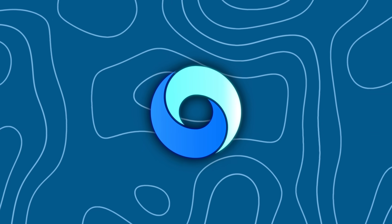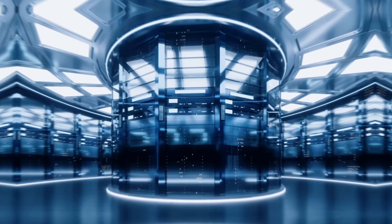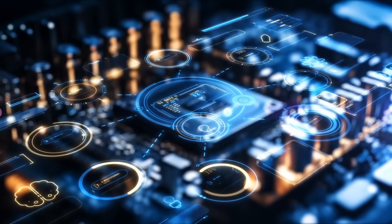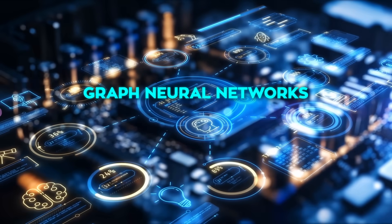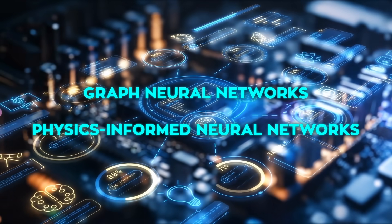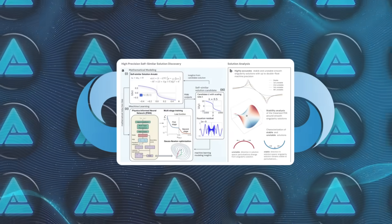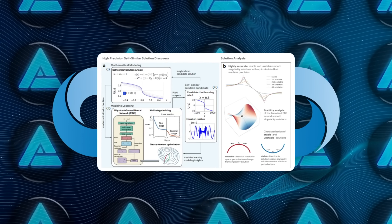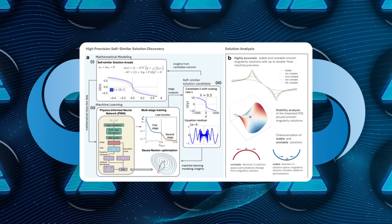What DeepMind did was take a totally fresh approach. Instead of just brute-forcing simulations with a supercomputer, they turned to graph neural networks and something called physics-informed neural networks, or PINs. Now, unlike normal neural nets that just learn from giant datasets, PINs are trained directly on the equations themselves.